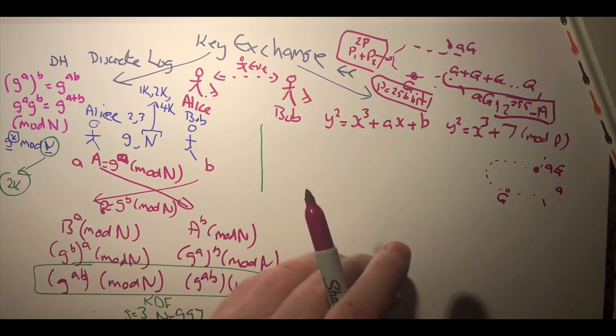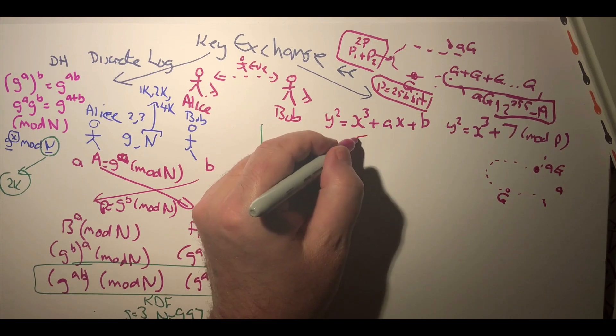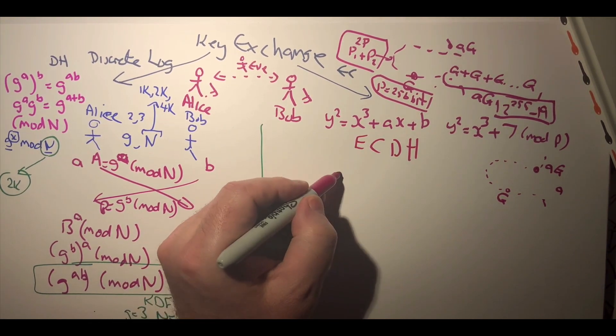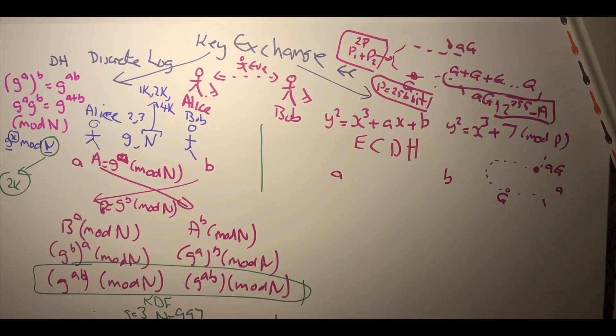So with the elliptic curve Diffie-Hellman method, or ECDH, what we have again is a and b that are generated.